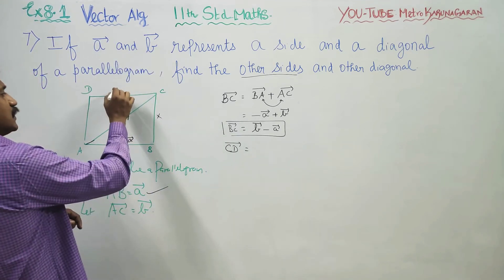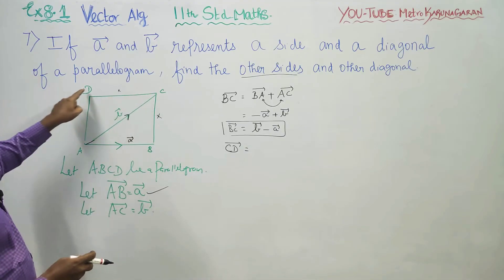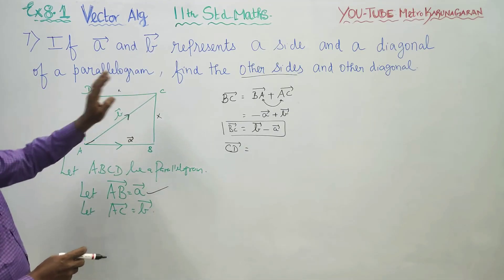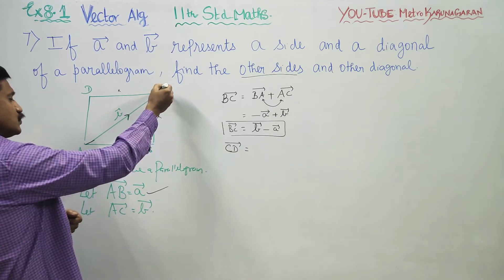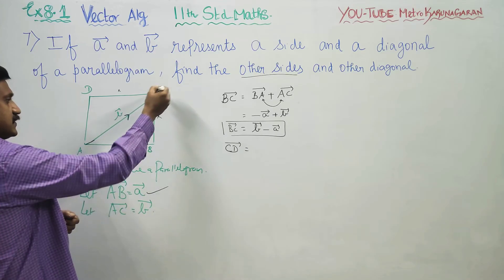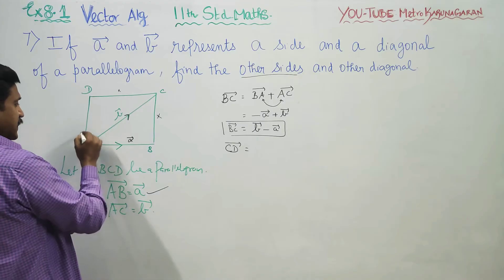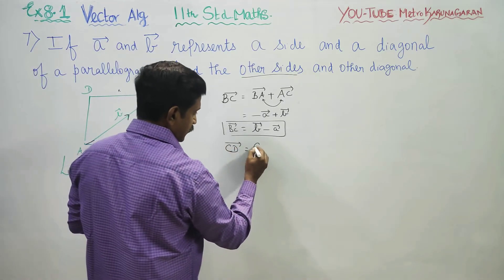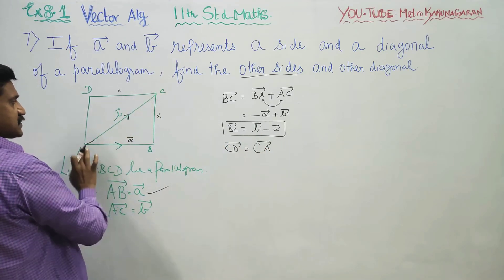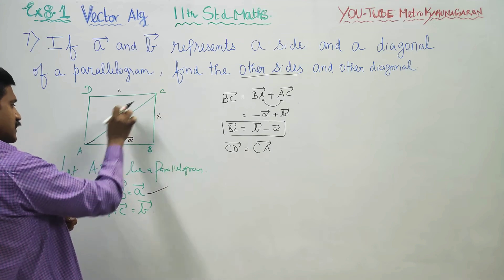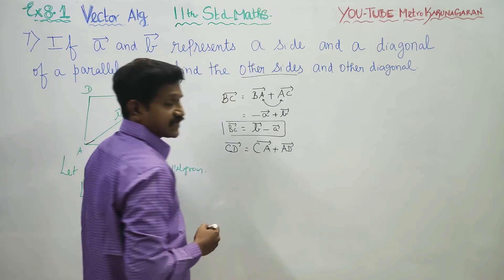AB is already known, BC is found. Now CD is to be found. Again, this road is blocked — CD is blocked. You can go through CA and then through AD. So, starting with C, reaching A: CA vector, then AD vector. Therefore, CD equals CA plus AD vector.